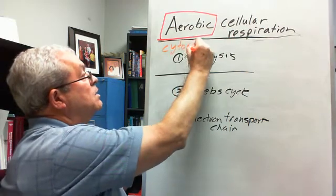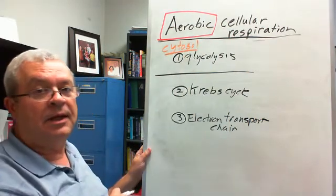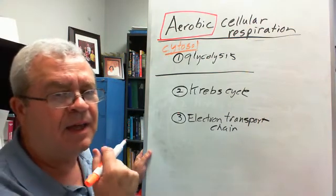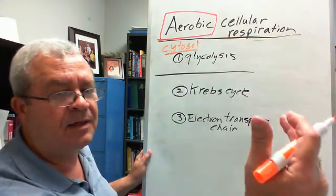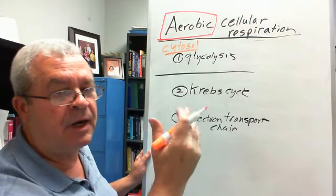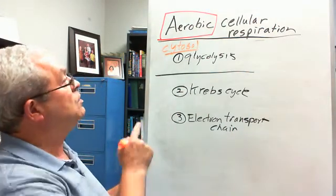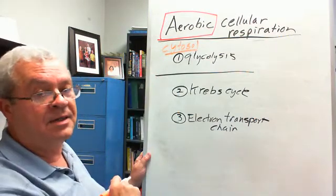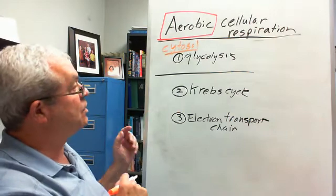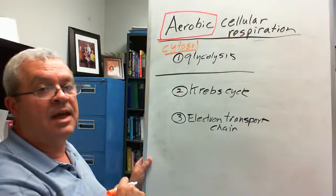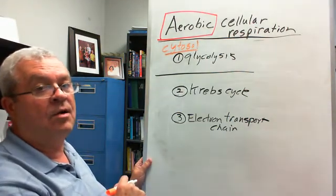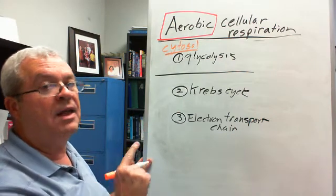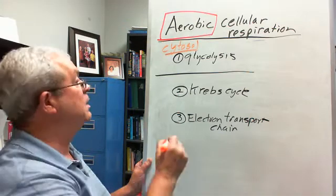Cytosol. And what is the cytosol? The liquidy part of the cytoplasm. What's the cytoplasm? Everything inside the plasma membrane outside the nucleus. The cytosol is the liquidy part of the cytoplasm. Where do these two stages occur? They occur inside an organelle called a mitochondrion in the singular, mitochondria in the plural.